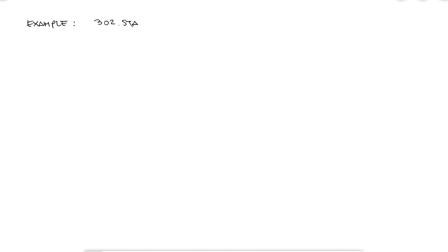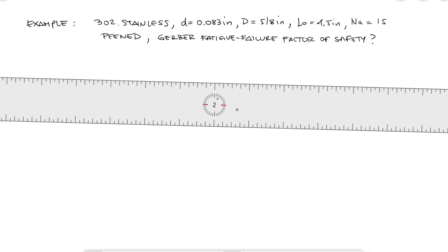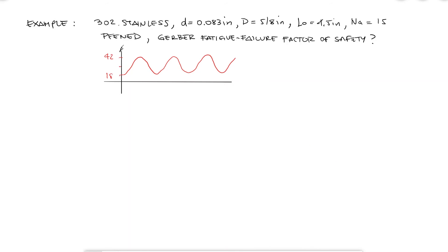If I have a helical compression spring made of 302 stainless steel that has a wire diameter of 0.083 inches, a mean coil diameter of 5/8 of an inch, a free length of 4.5 inches and 15 active coils, and the spring is peened, what would the factor of safety guarding against fatigue failure using a torsional Gerber fatigue failure criterion be if the spring is going to be assembled with a preload of 18 pounds and will operate under cyclic loading, going up to a maximum load of 42 pounds?